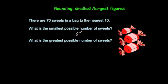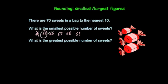Well, 69 would round up to 70, as would 68, 67, 66, and 65. But 64 would round down to 60. So therefore the smallest possible number of sweets in the bag would be 65. 65 is the smallest number that rounds up to 70.